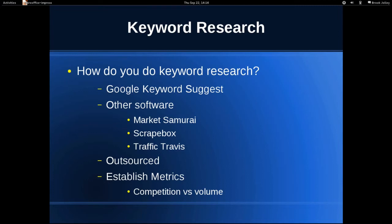Another important thing is to establish some sort of metrics to determine whether the keywords you're focusing on are actually valuable. A good way to look at that is with a program like Market Samurai or Traffic Travis — tools that track how many websites target a specific term, compare that with overall competition, how many people target your specific keyword, what the page rank of those sites is, and from that you can determine the difficulty of ranking. It's best to establish some metric for how difficult a keyword you are willing to invest time in targeting.